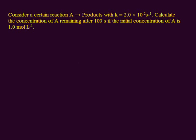Consider a certain reaction: reactant A produces products. This is the reaction given here with the rate constant 2.0 × 10^-2 per second. When the rate constant of the reaction is given, the question says calculate the concentration of reactant A remaining after 100 seconds.